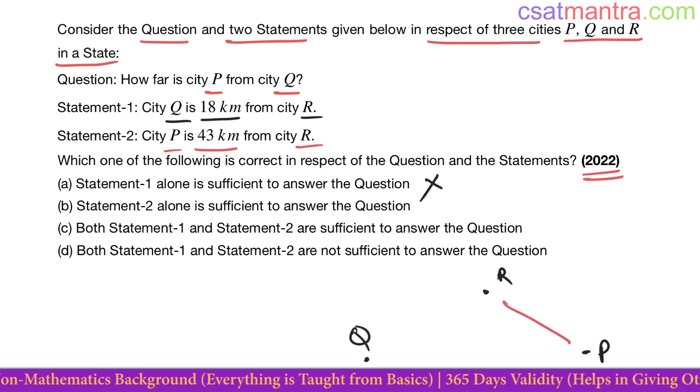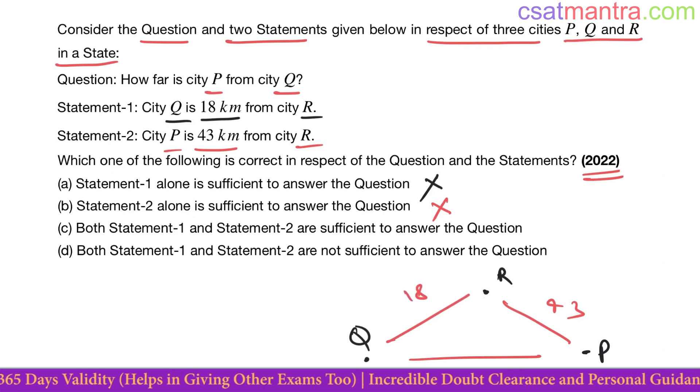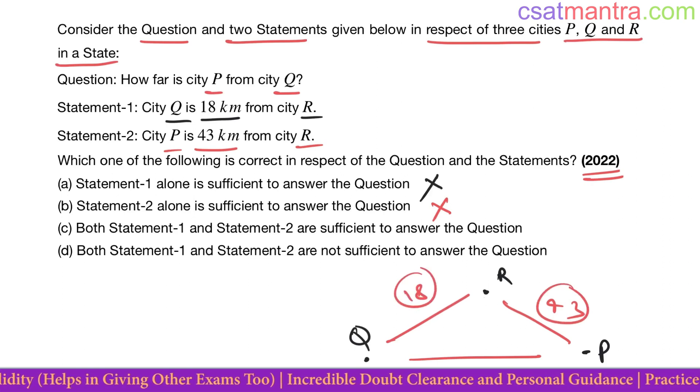This is 43. It says nothing about the distance between P and Q, so Statement 2 is also not sufficient. Now combine both of these. You may say the answer is 18 plus 43, but the answer can be different.